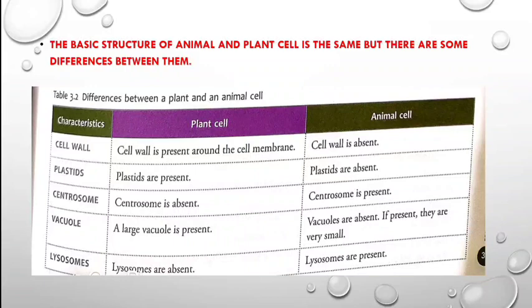Plastids — chromoplasts, chloroplasts, and leukoplasts, which we studied in the previous lesson. Plastids are present in plant cells because they impart color to the plant, flower, fruit, or vegetables. But in animal cells, the plastids are absent.